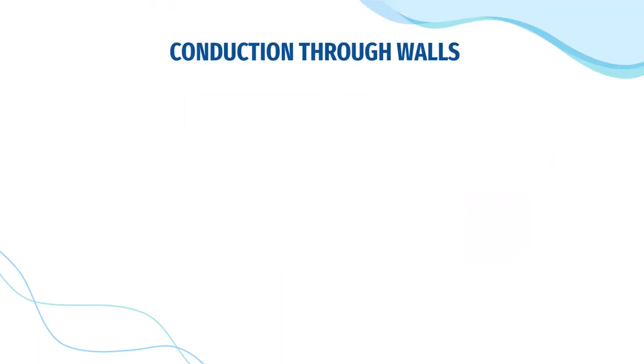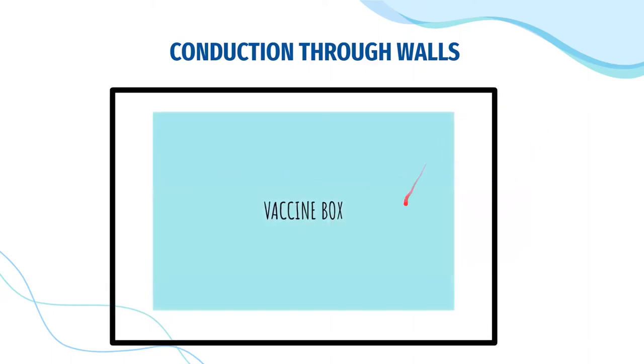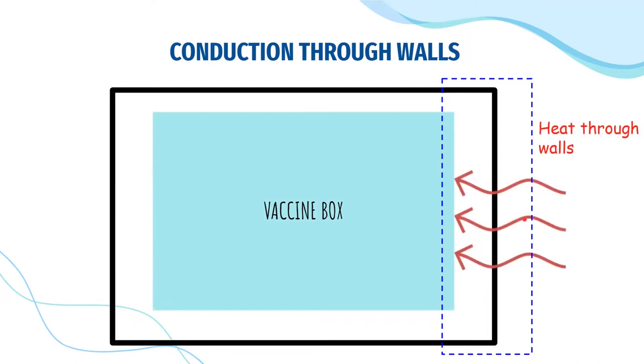Now, let us move on to the third process conduction through walls. So, without loss of generality, let us take a control volume around the right wall of the vaccine box. So, as the temperature of the box is lower than that of outer air, there is the convective heat flux from air to the wall which slowly increases the box temperature. The same control volume analysis exists for other walls too.